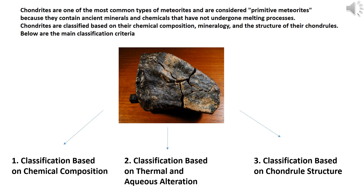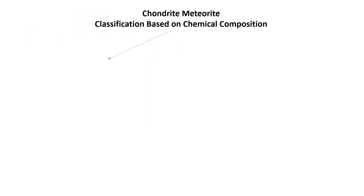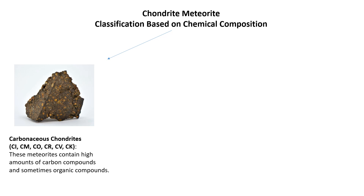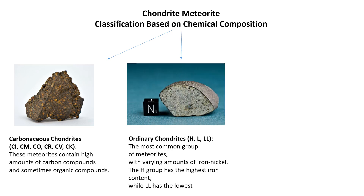Classification based on chemical composition. Carbonaceous chondrites (CI, CM, CO, CR, CV, CK): these meteorites contain high amounts of carbon compounds and sometimes organic compounds.